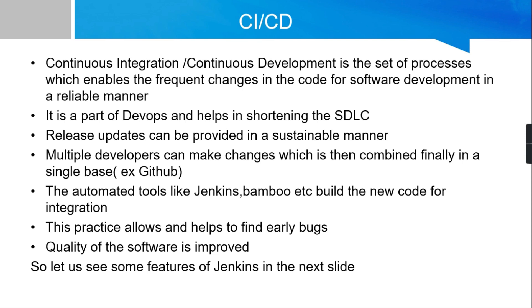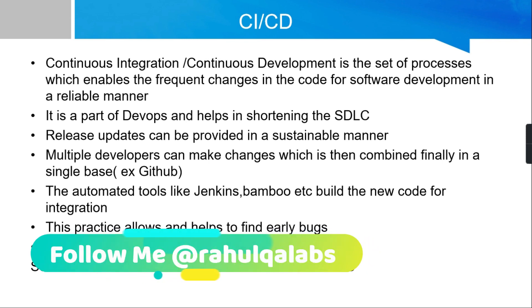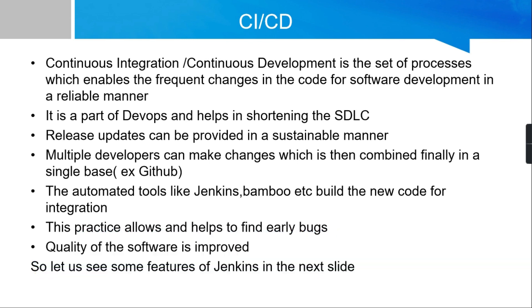It is a part of DevOps and it helps in shortening the development lifecycle so that release updates can be provided in a sustainable manner. Multiple developers can make changes which are then combined into a single final branch, for example on GitHub. Automated tools like Jenkins and Bamboo build the new code for integration, and CI/CD practice helps to find bugs early and improves the quality of the software.